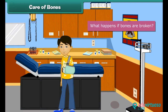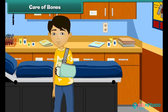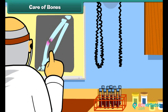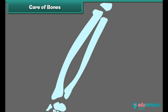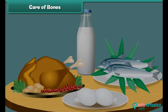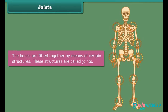What happens if bones are broken — is it possible to join them? Yes, broken bones can be joined with the help of plaster. The plaster gives the bones support from outside. For the growth and repair of bones, we must eat plenty of protein-rich foods.